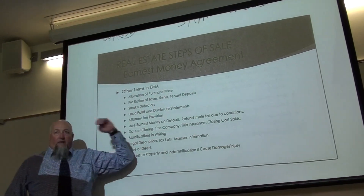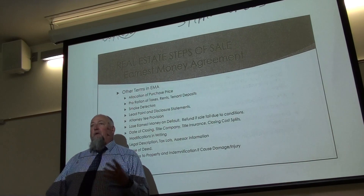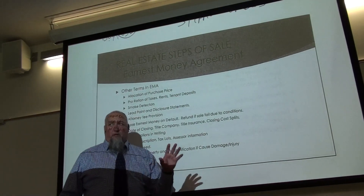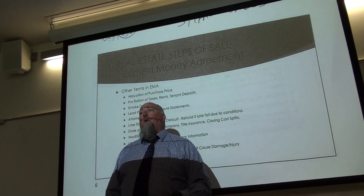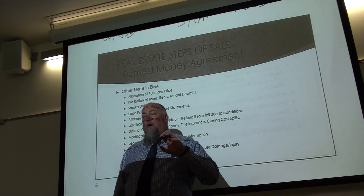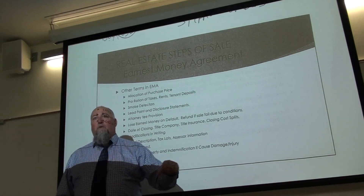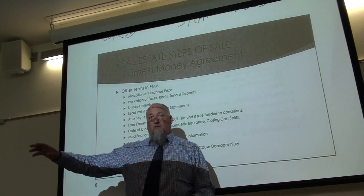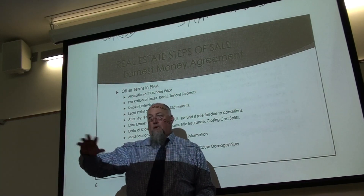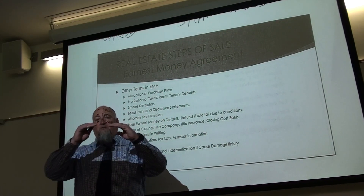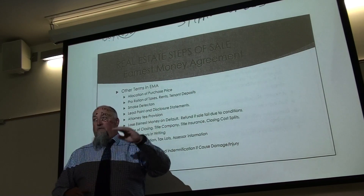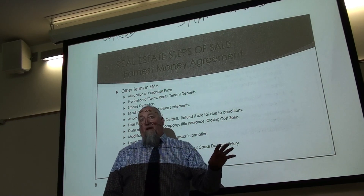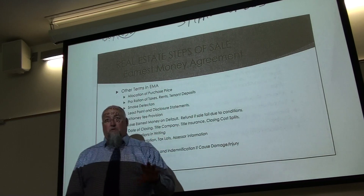Allocation of the purchase price — for residential this is not as important, but if you're buying a rental, commercial, or agricultural property, you're going to allocate the price between the ground, the value of a building, outbuildings, and other improvements like fencing or irrigation. We itemize it into various categories from a depreciation standpoint because the buyer may have more favorable tax treatment depending on how you allocate the price.